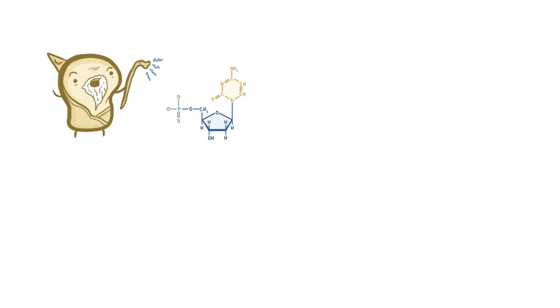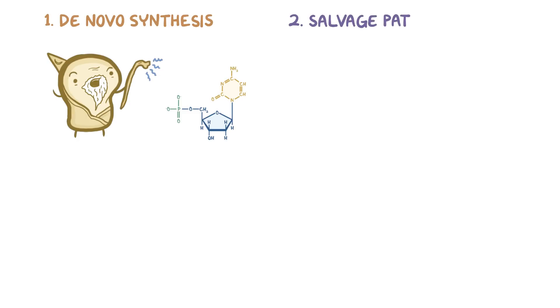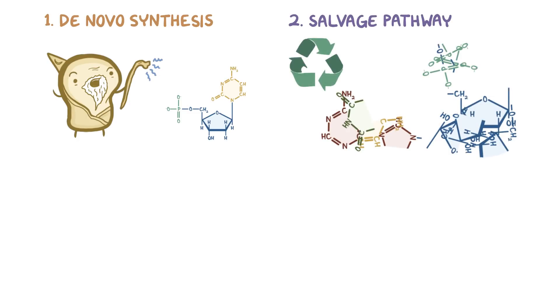There are two ways our cells can make nucleotides. One is from scratch, also known as de novo synthesis. And the other is the salvage pathway, which recycles nucleotides that are already semi-degraded.